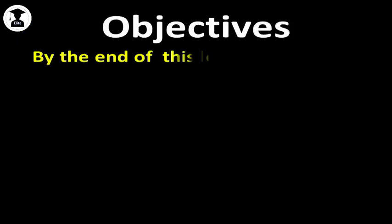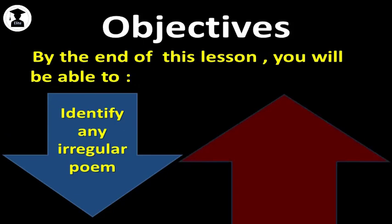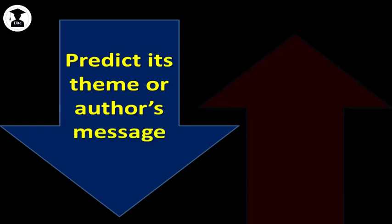By the end of this lesson you will be able to: Number 1, identify any irregular poem. Number 2, analyze its component parts. Number 3, predict its theme or author's message. And finally, you will be able to identify the figures of speech and the sound devices.